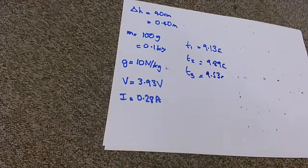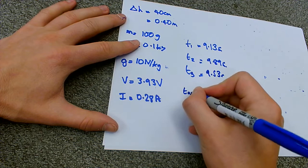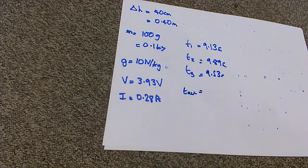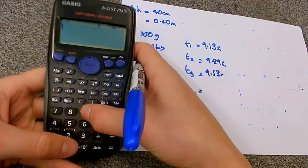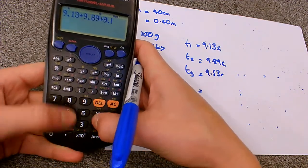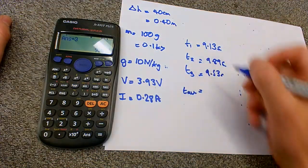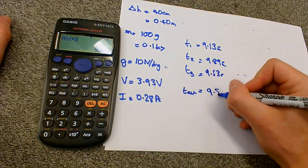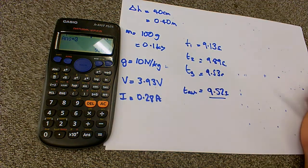So let's come back to our data now. So the first thing I'm going to do is work out the average time that it took to lift it 40 centimeters. So when I say average, I mean the mean. So let's do that first of all. So 9.13 plus 9.89 plus 9.53 gives us 9.52 seconds. Okay, so that's our time.